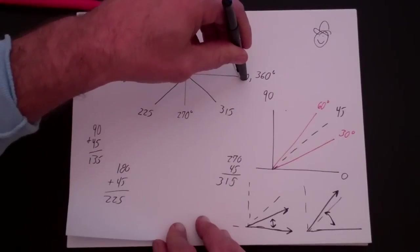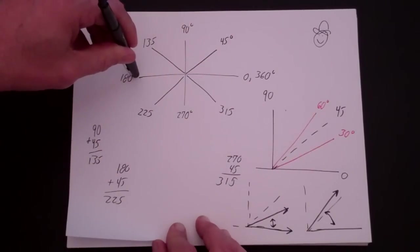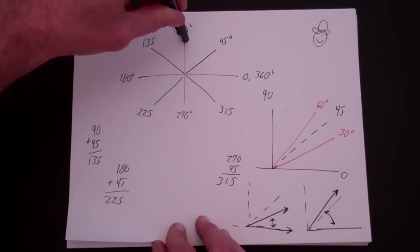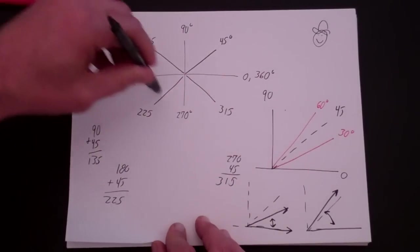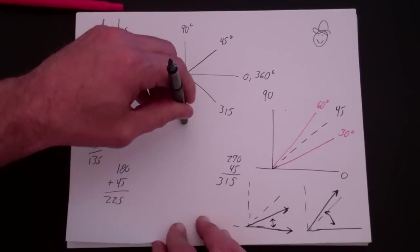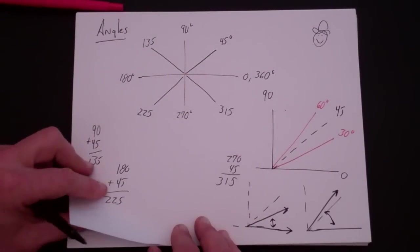An entire circle is 360. Half a circle is 180. Half of that is 90. If you go to three 90s, it's 270. And then each one of those are 45.